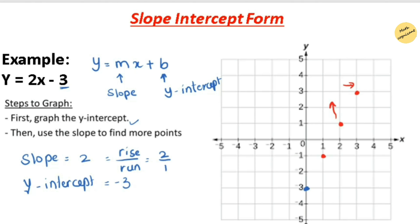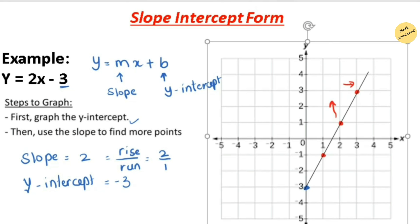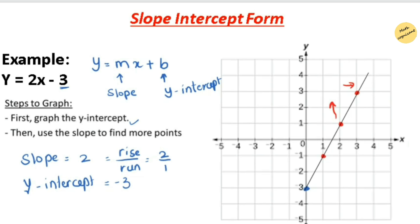With a slope of 2, you shift 2 points up and 1 point to the right, or alternatively 2 points down and 1 point to the left. Then join all the points to make a straight line. This graph has a positive slope because the line moves upward from the left side toward the right side of the x-axis.